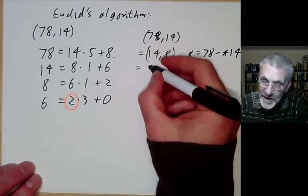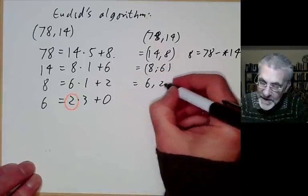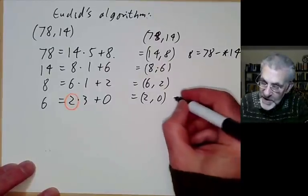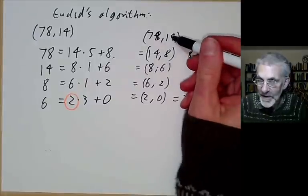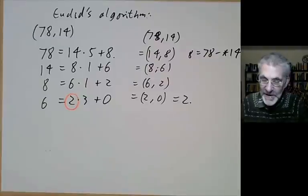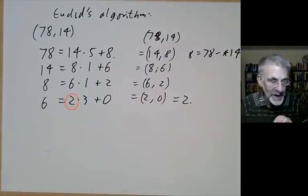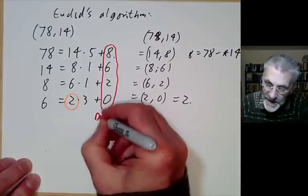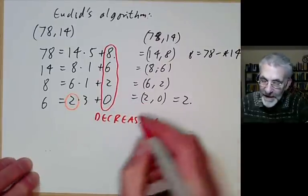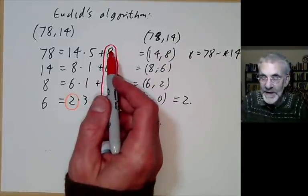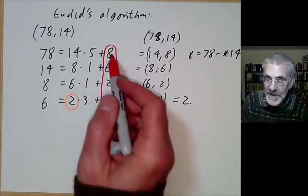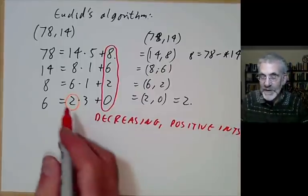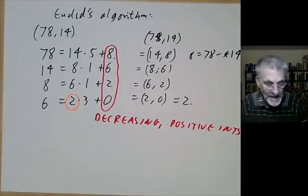Why does this work? gcd(78,14) equals gcd(14,8) because 8 = 78 − 5×14, so subtracting multiples of one number from the other doesn't change the gcd. Similarly, this equals gcd(8,6), then gcd(6,2), then gcd(2,0) = 2, which is trivially correct. So when the algorithm terminates it gives the correct answer. It also terminates because the remainders are strictly decreasing — each remainder is less than the divisor by Euclid's division algorithm — and a strictly decreasing sequence of positive integers must be finite.